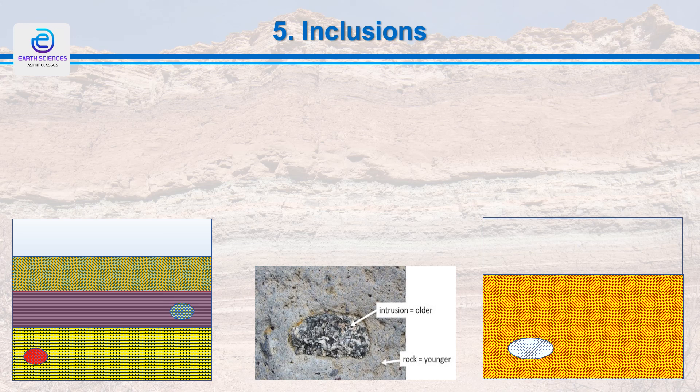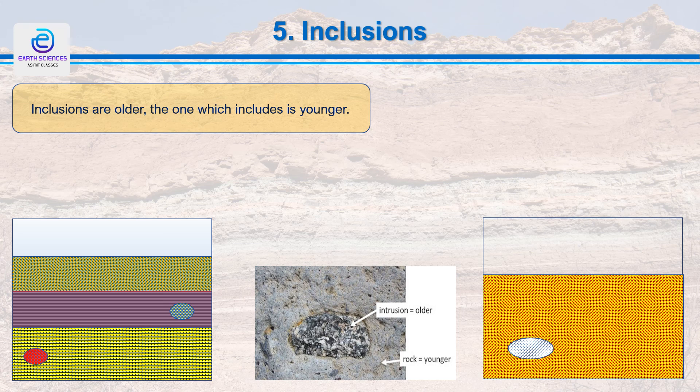Sedimentary rocks are often made up of clasts or fragments of older rocks, carried by river water or another medium and deposited in a basin. After deposition, these clasts get consolidated into rock. These clasts range in size from very fine silt to gravel fragments and are termed inclusions in the sedimentary rocks. In lava flows, inclusions are known as xenoliths, as seen in the diagram. The principle of inclusion states that inclusions are always older than the rock in which they occur, since they are derived from pre-existing rocks.